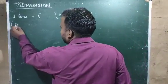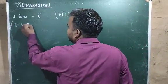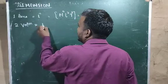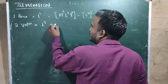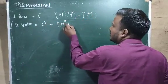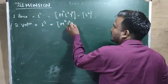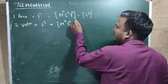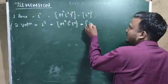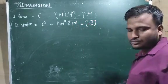The second one is volume. Volume equals L³, so the dimensional formula is M⁰ L³ T⁰, which simplifies to L³.